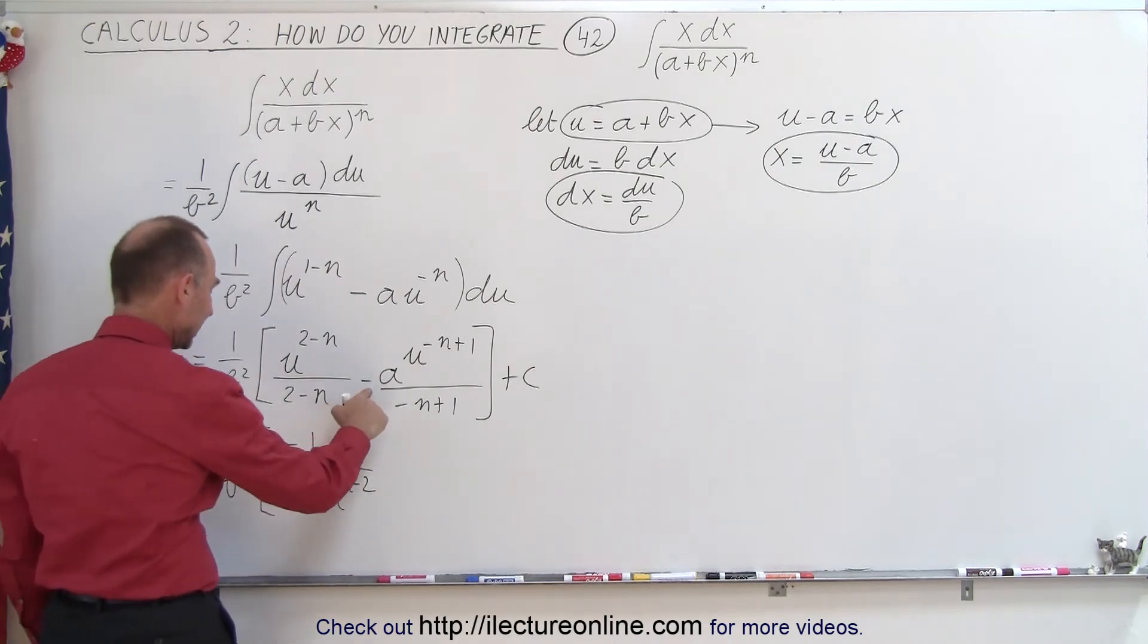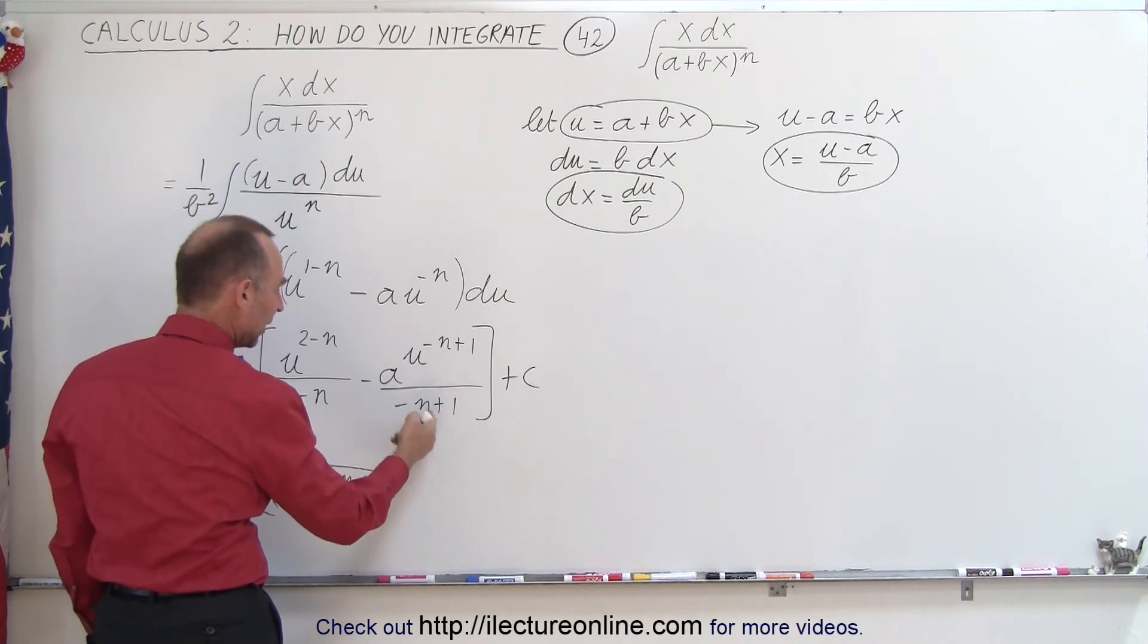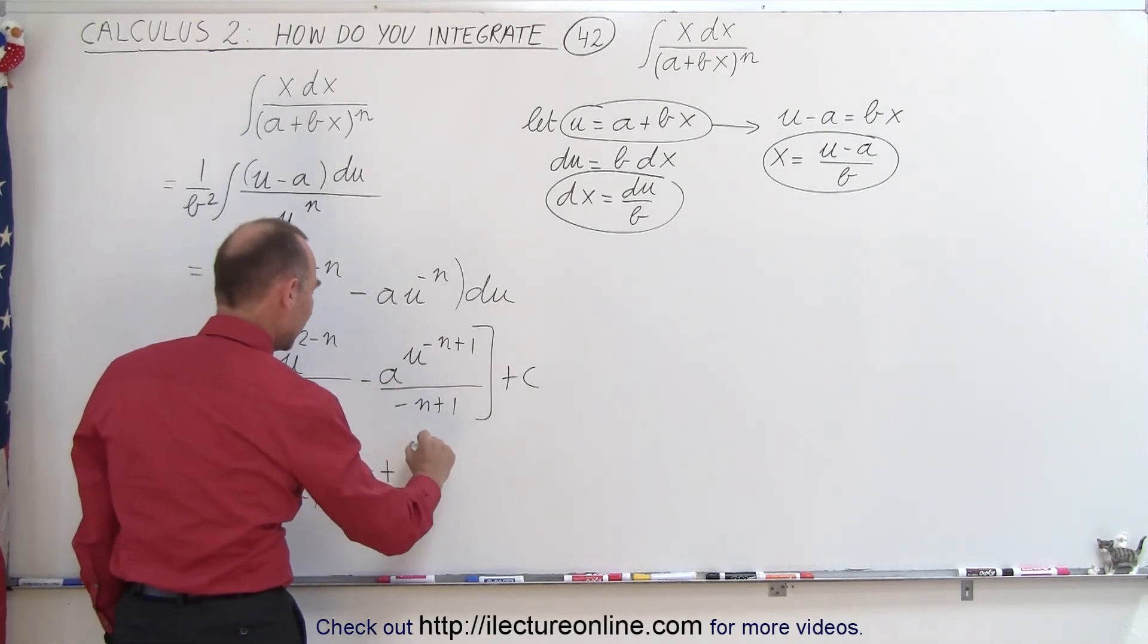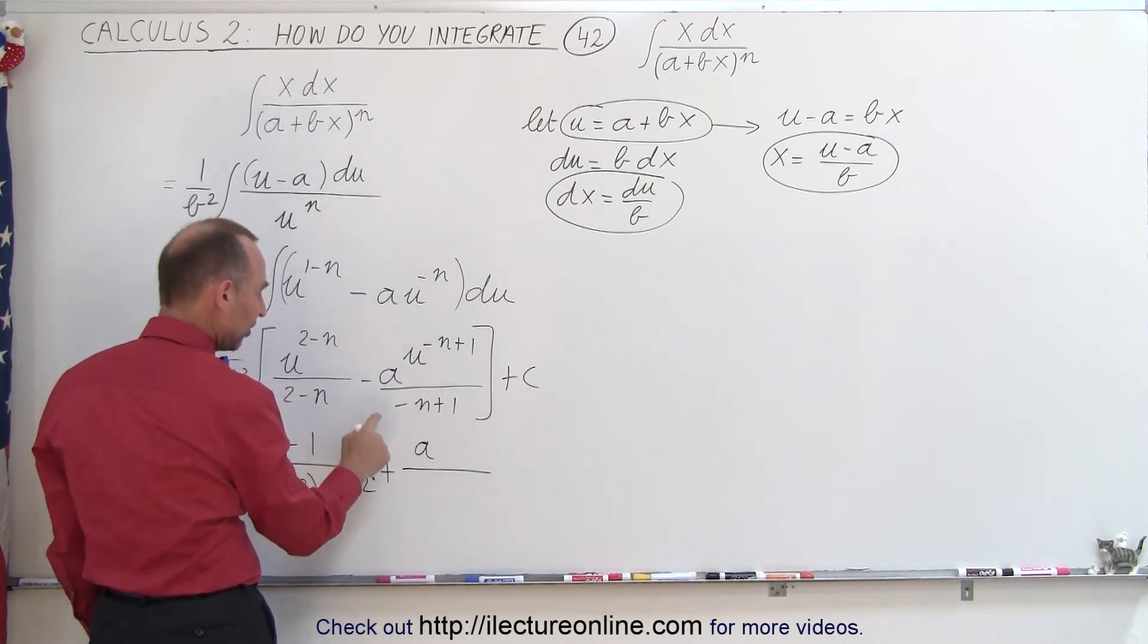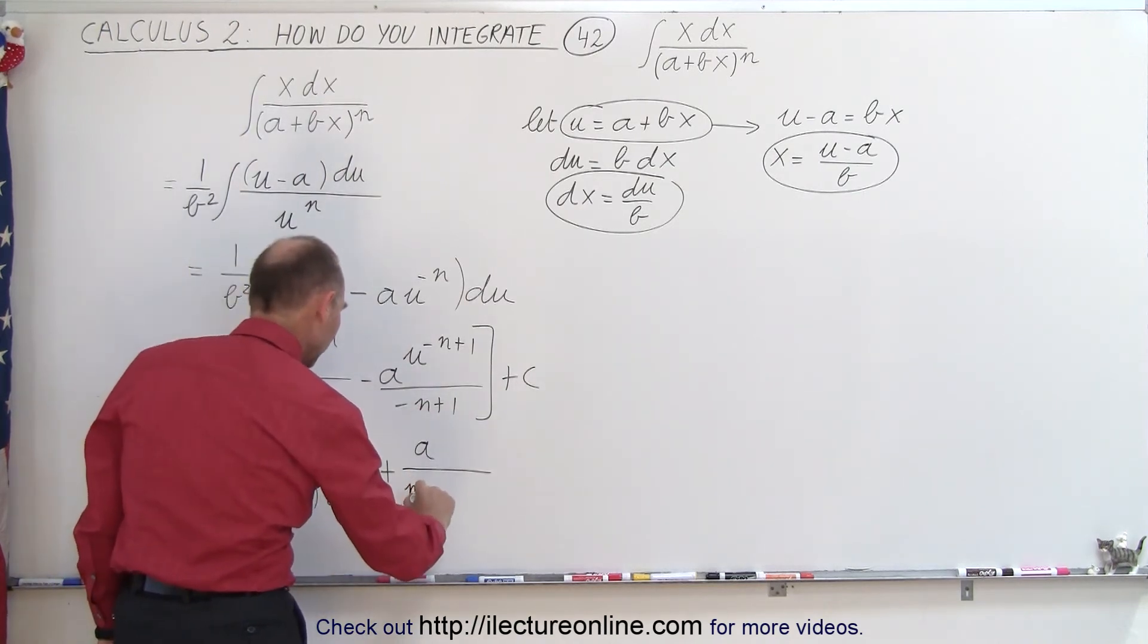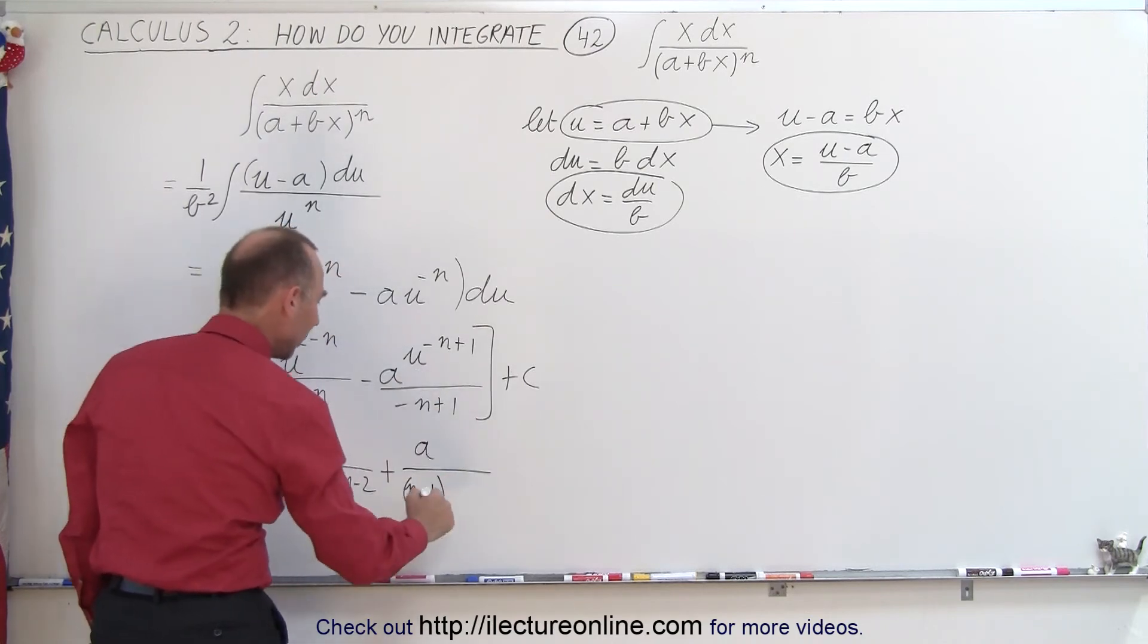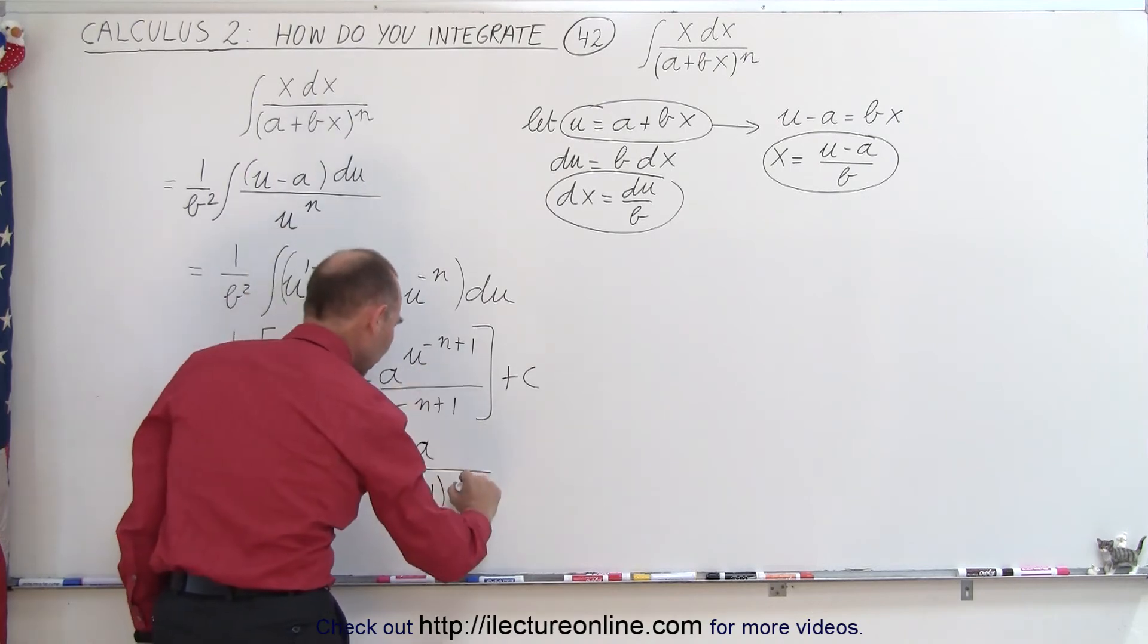And then here we have a negative, but since we're going to switch these two around that becomes positive again, plus here we have an a in the numerator divided by, since we change the sign here from negative or plus we're going to switch these around. So we're going to end up with a positive n minus 1 times when we bring this down we get u to the positive n minus 1 as well.